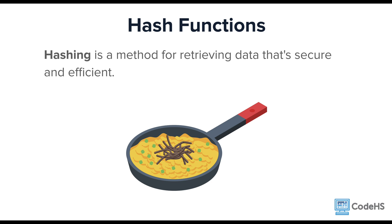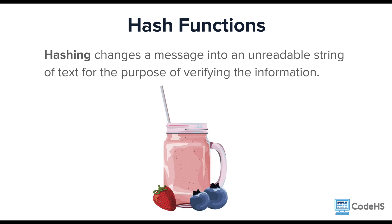The word hashing literally means to scramble. In cooking, hash is a dish consisting of diced or chopped meat, potatoes, and spices that are all mixed together and then cooked. However, there's no way you could take that dish and go back to the uncooked ingredients. Another analogy is making a smoothie — you can add many ingredients into a blender and mix them into a smoothie, but there's no way to unmix back to the original ingredients. In cryptography, hashing changes a message into an unreadable string of text for the purpose of verifying the information. There's no key involved like with symmetric or asymmetric cryptography, and good cryptographic hashing is nearly impossible to reverse back to the original input.